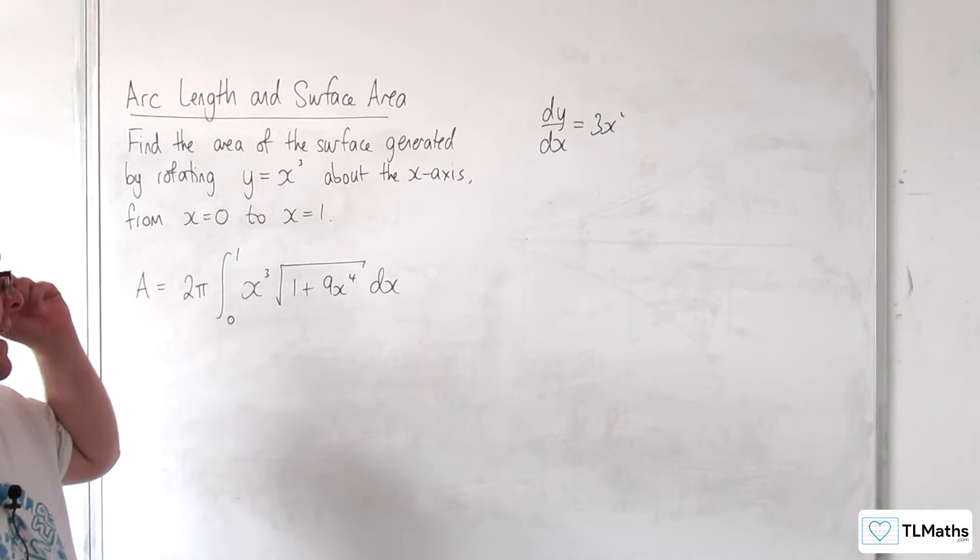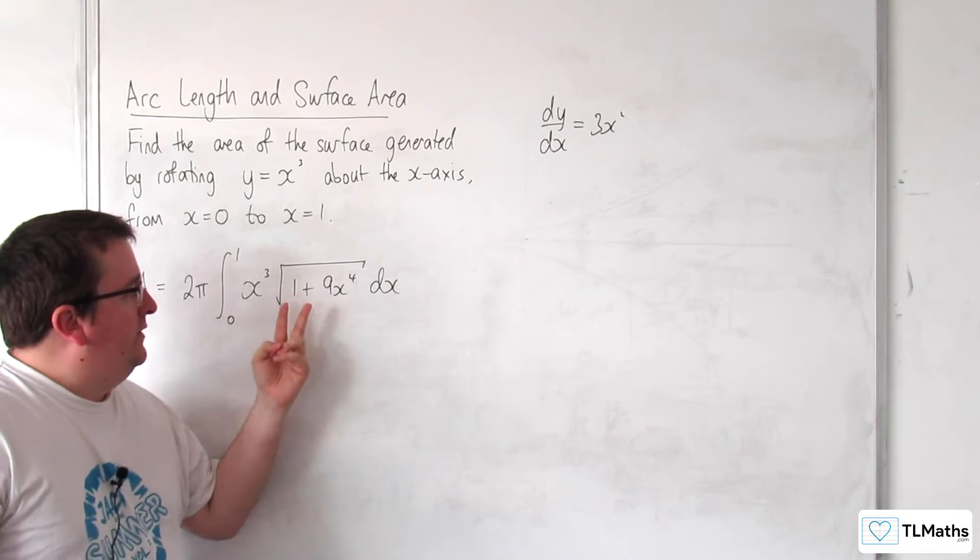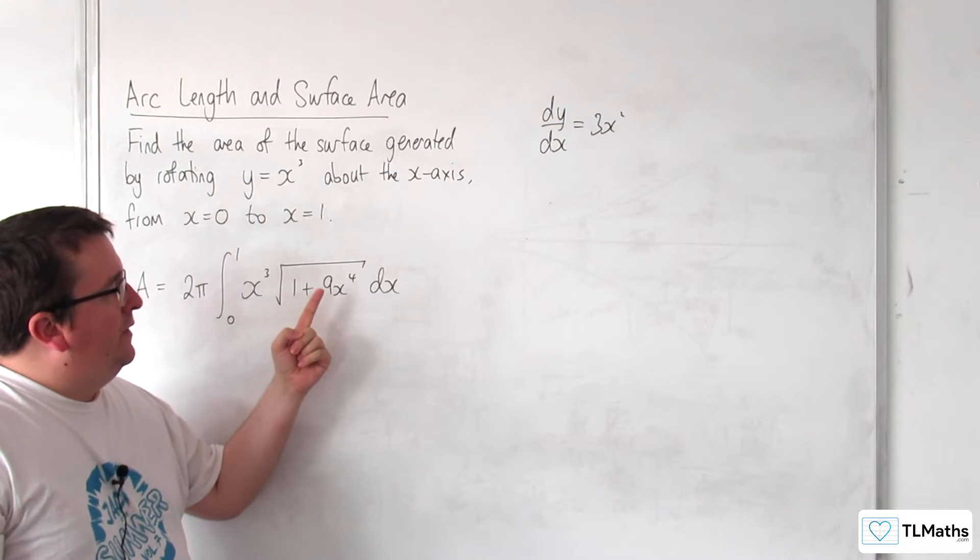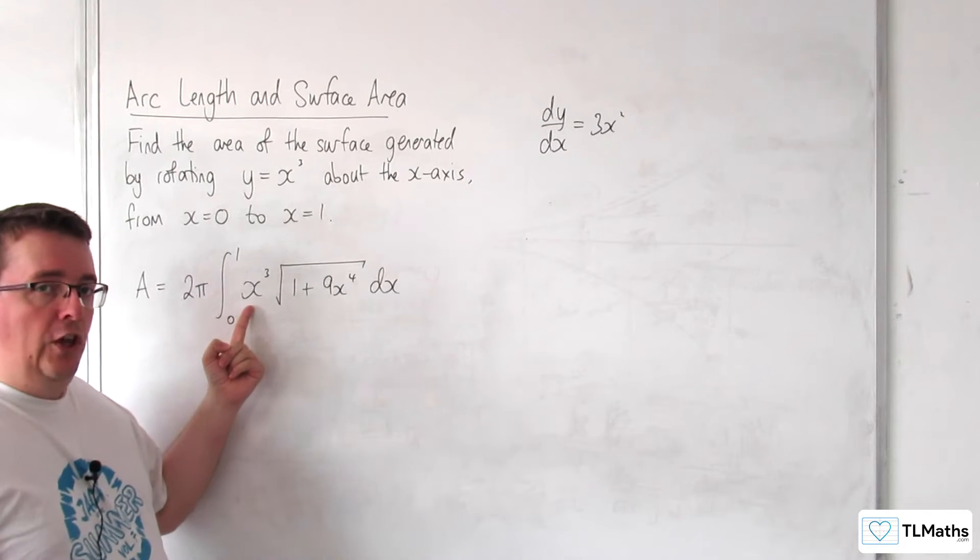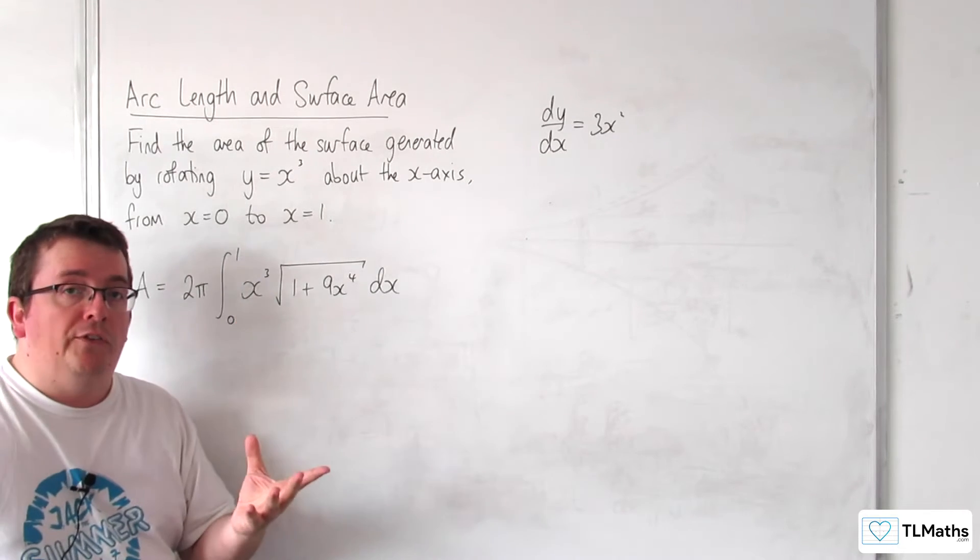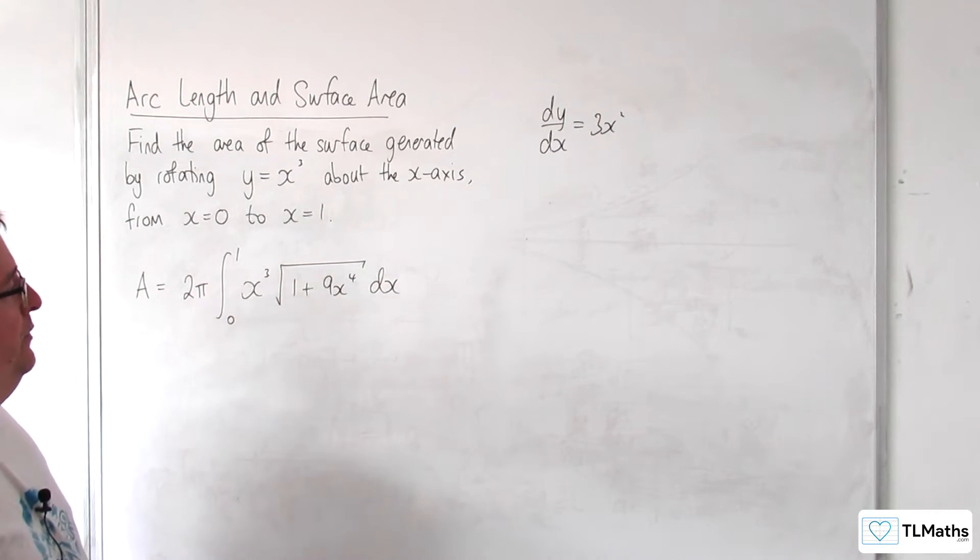Now the convenient thing here is that inside my square root, I've got this 9x to the 4. This differentiates to a multiple of x cubed, so I know I can use reversing the chain rule or integration by substitution.